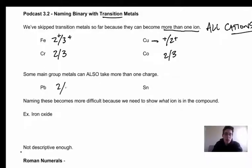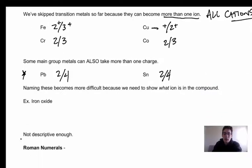These are the two that are going to pop up the most. Lead is Pb, tin is Sn, and both of these can be a 2+ or 4+ ion. So transition metals all have multiple ions, and then these two main group also can have multiple ions.